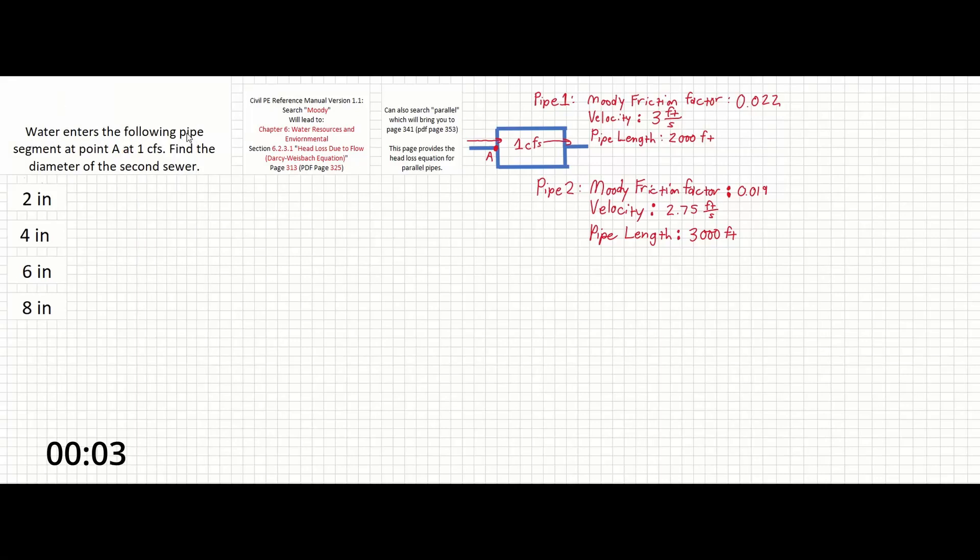Water enters the following pipe segment at point A at one CFS. Find the diameter of the second sewer. So over here is the given pipe network.